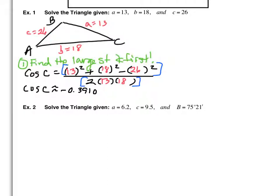A lot of people in the last class didn't get it, so don't be afraid to say you didn't. The common error is not hitting enter after the numerator. So: do the numerator separately, hit enter, and then take the entire denominator in parentheses — two times 13 times 18, all in parentheses — and divide. Try that and you should get negative 0.3910.